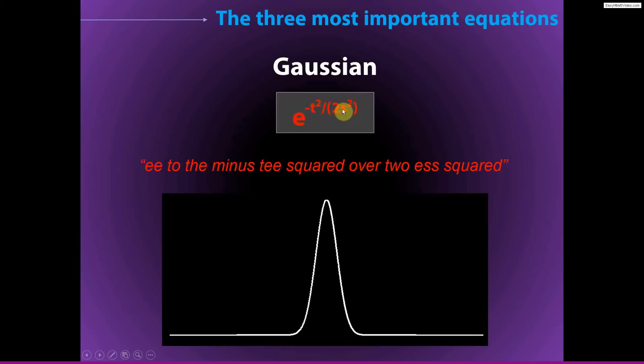S refers to the standard deviation or the width of the Gaussian, and it's a parameter that defines how wide it is. You can imagine it being more narrow versus more wide. What I'm excluding here is also an amplitude that defines the peak of the Gaussian. We generally don't use this for time frequency analyses.